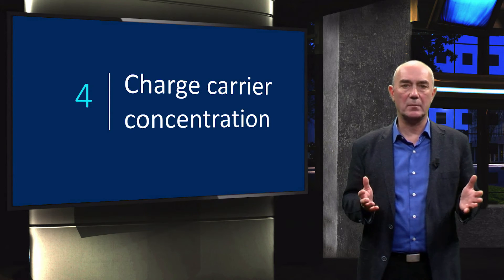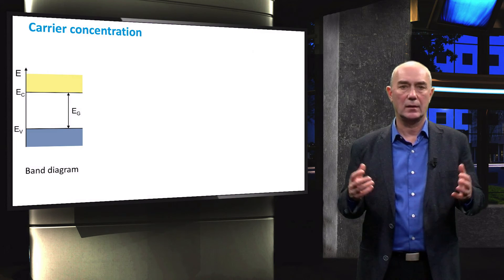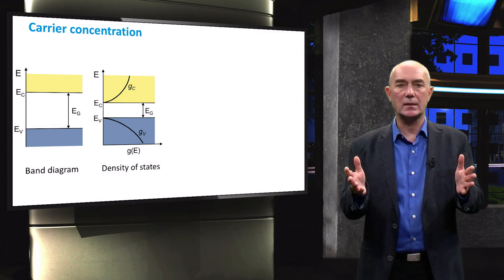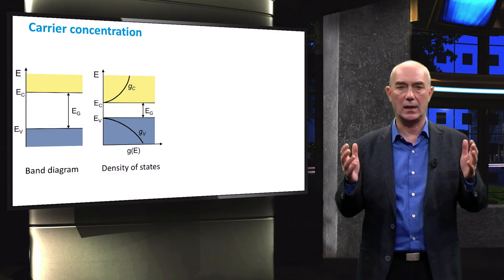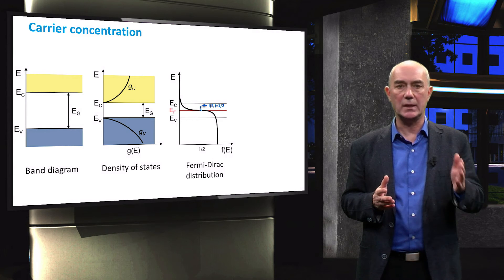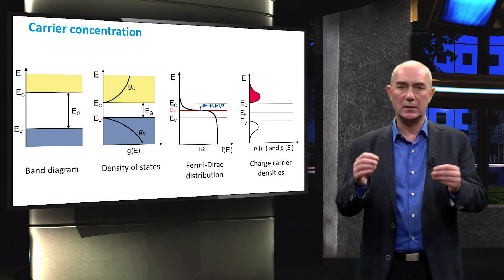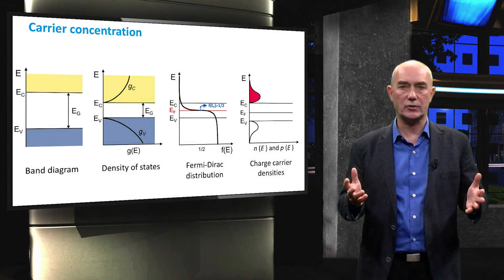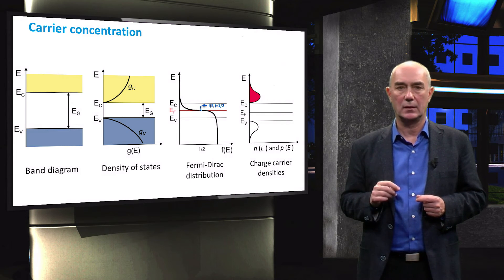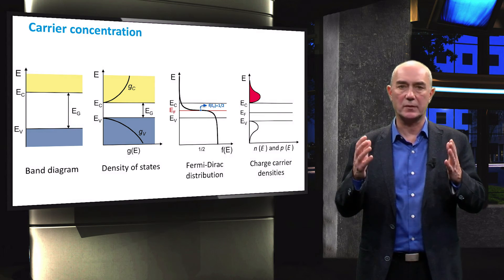We have now defined all the parameters necessary to determine the charge carrier concentrations in thermal equilibrium. Let's recap: firstly we understood the energy band diagrams, then we defined the density of states function to describe all allowed states. The next step was to look at the occupation of these states, for which we introduced the Fermi-Dirac distribution function. Now the last step is to determine the charge carrier densities in the conduction and valence bands. On the top we can see the occupation of the conduction band states, and on the bottom the occupation of the valence band states.